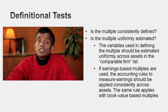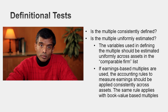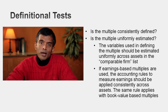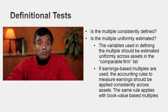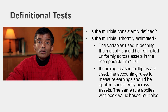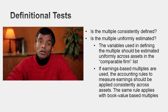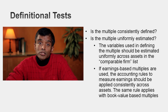When defining a multiple, the first question to ask is: is this multiple consistently defined? Every multiple is a numerator and a denominator. If your numerator is an equity value, your denominator must be an equity value as well. If your numerator is a firm or enterprise value, your denominator must be a firm or enterprise value. Take P/E ratios — the numerator is market value of equity, and earnings per share is equity earnings divided by shares, so that's consistent. Similarly, EV-to-EBITDA: the numerator is market value of equity plus debt minus cash — a measure of the market value of operating assets — and the denominator is earnings before interest, taxes, depreciation, and amortization, a measure of operating cash flows. EV-to-EBITDA is consistent.